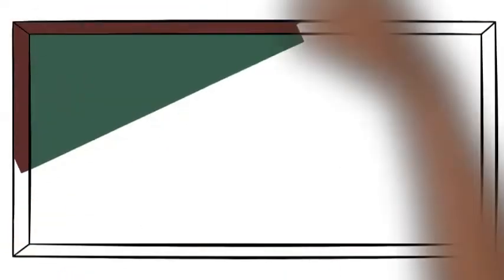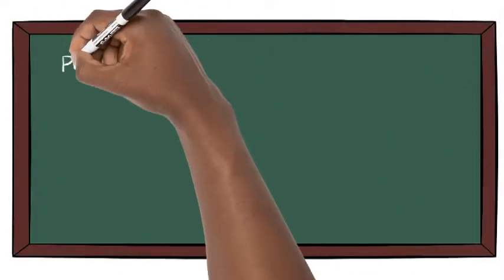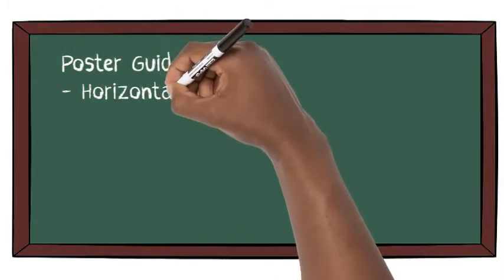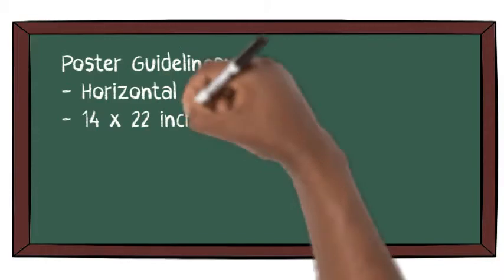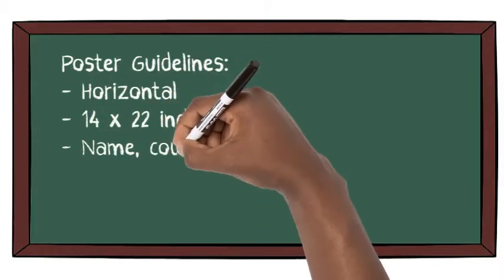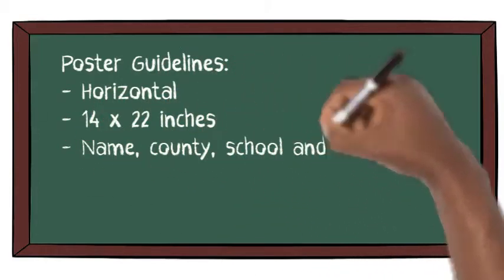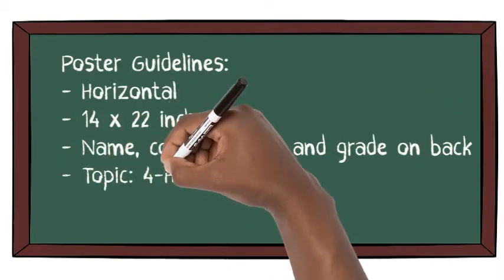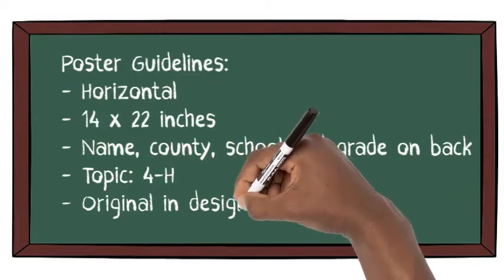The guidelines for the 4-H poster contest are: the poster must be horizontal, which is across the page. The size of the 4-H poster is 14 by 22 inches, which is a half a sheet of poster board. On the back of the poster, be sure to include your name, your county, your school, and your grade.